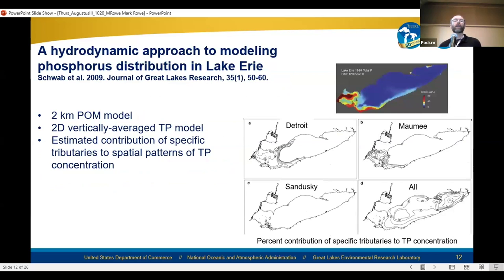Here's another example by Schwab and others — the application of a two-kilometer grid Princeton Ocean Model to Lake Erie, using that to drive a two-dimensional vertically averaged total phosphorus model. This type of model can be used to show the influence of specific tributary inputs on nearshore water quality and spatial patterns of total phosphorus in the lake. By turning on or turning off rivers in the model simulations, we can see what impacts specific rivers have on nearshore water quality, which can help direct restoration activities towards specific watersheds.